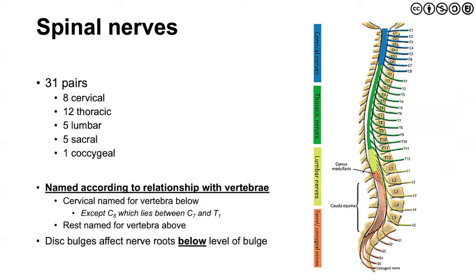Spinal nerves — there are 31 pairs in total. The name is according to the relationship with the vertebrae. In the upper cervical spine, there are eight spinal nerves and yet only seven levels, so the spinal nerve is named for the level just below it. As we move into the lumbar spine, the spinal nerve is named for the level just above it. As such, a disc bulge affects the nerve roots below the level of the bulge.